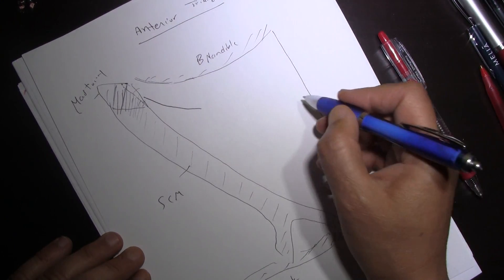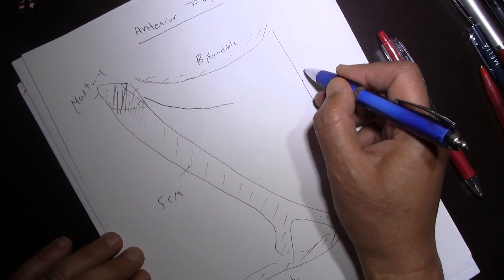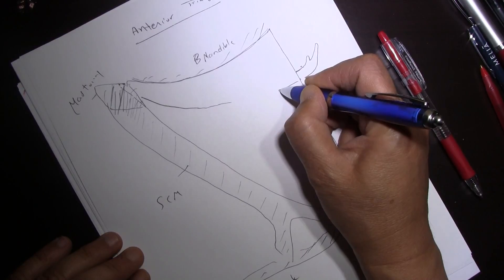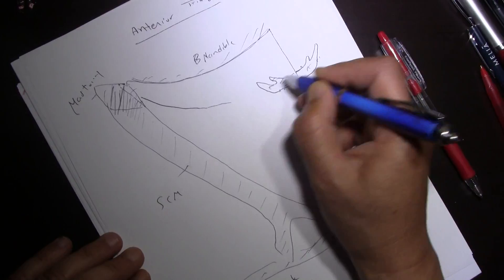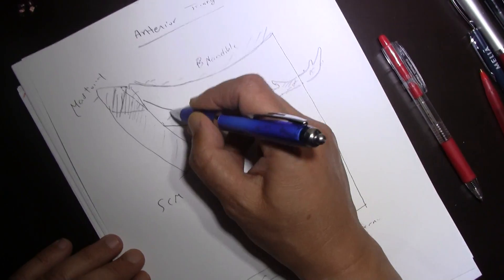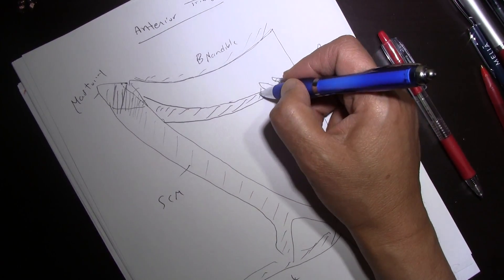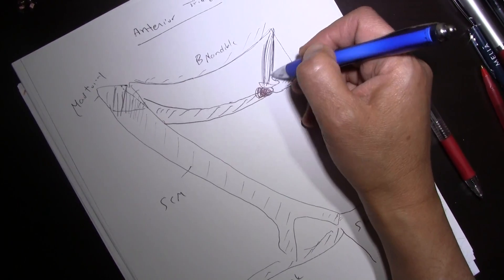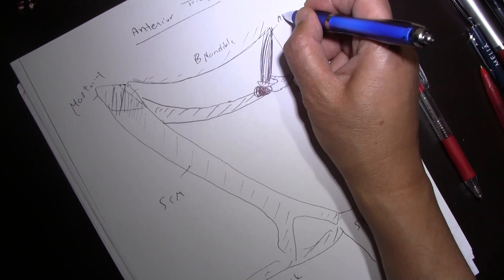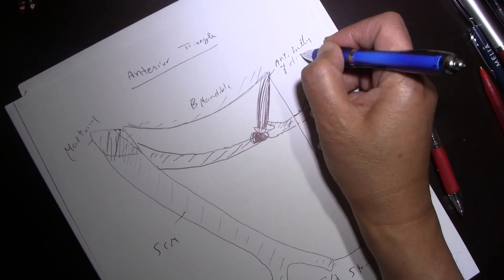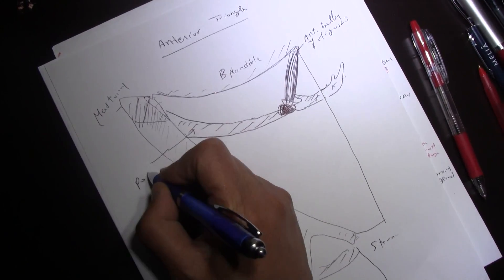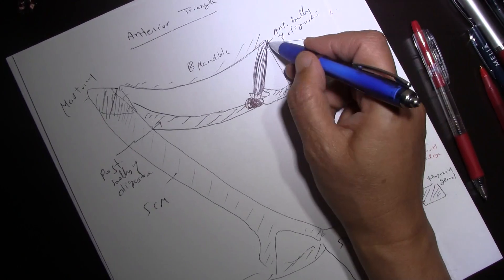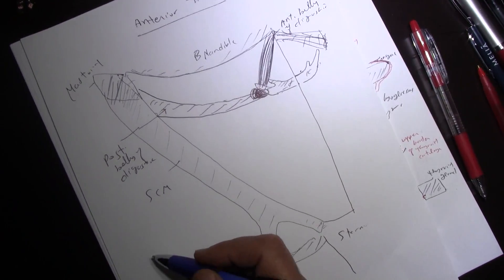There is also a muscle that takes origin from the mastoid process — this is the posterior belly of the digastric. Below the mandible, the bone in the midline is the hyoid bone. The posterior belly of the digastric and the anterior belly of the digastric meet each other at the intermediate tendon, which attaches to the hyoid bone.